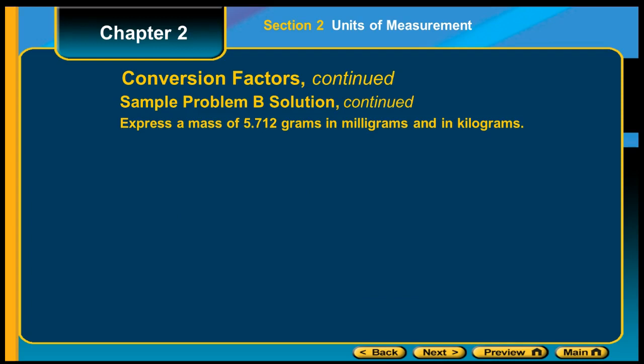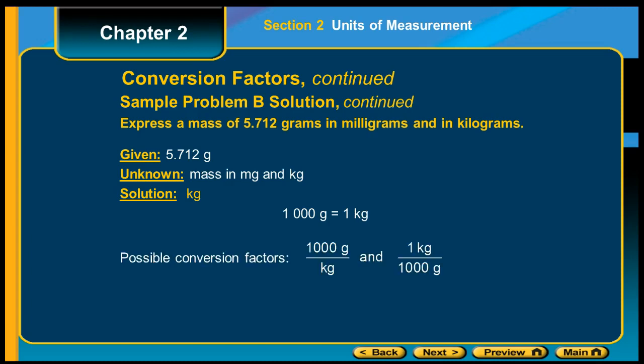If you're converting 5.712 grams into kilograms, now you're given 5.712 grams and we know that there are a thousand grams in a kilogram. So setting up the conversion factor, it can either be a thousand grams over one kilogram or one kilogram over a thousand grams. We are given 5.712 grams, so we are going to need to pick the conversion that has grams on the bottom. So we're going to pick this one.